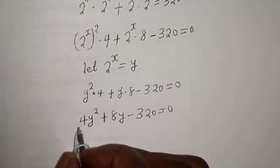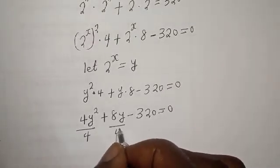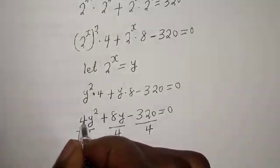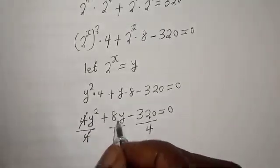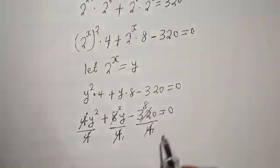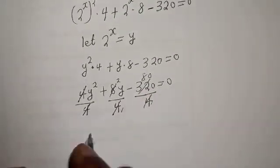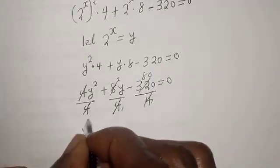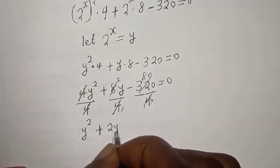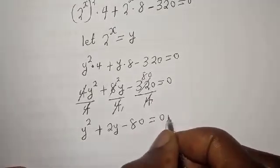We can divide all terms by 4. Dividing each term by 4, this gives us y squared plus 2y minus 80 is equal to 0.